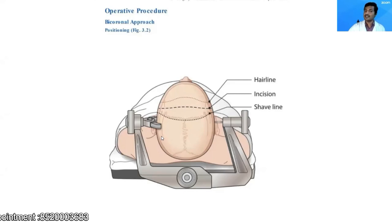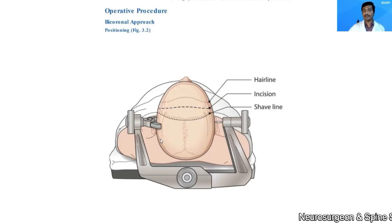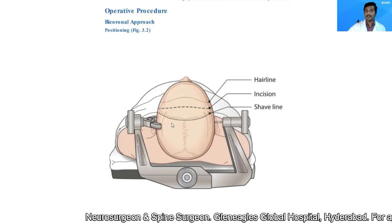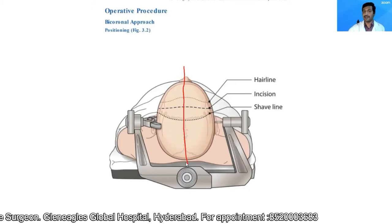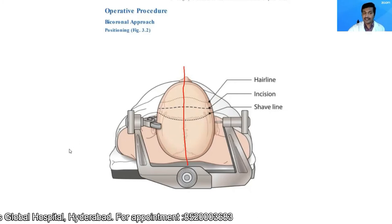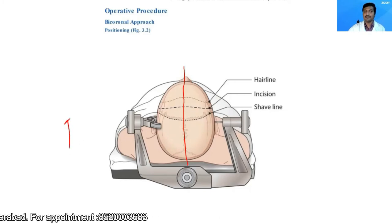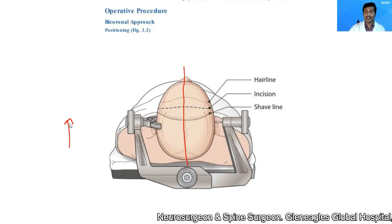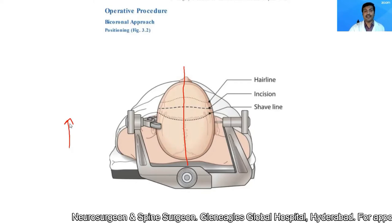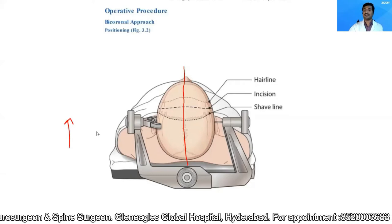Sometimes if you need to save time, you can position on a horseshoe headrest. I keep the head neutral in the midline and slightly elevate it above heart level. This ensures adequate venous return, decreases brain swelling, and also decreases venous ooze.